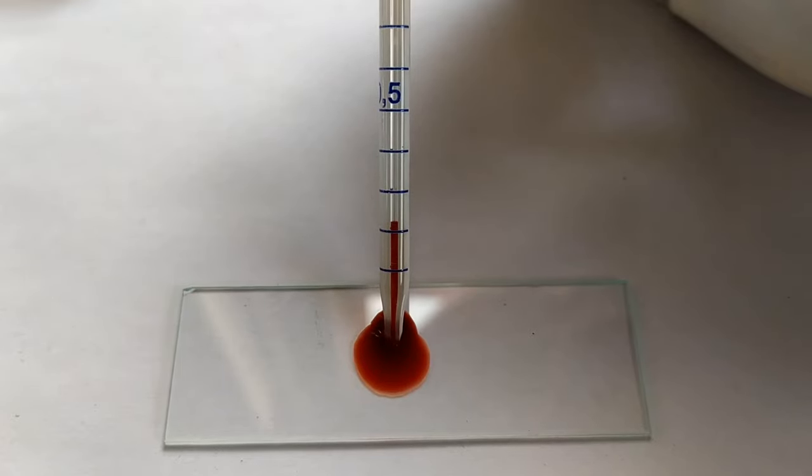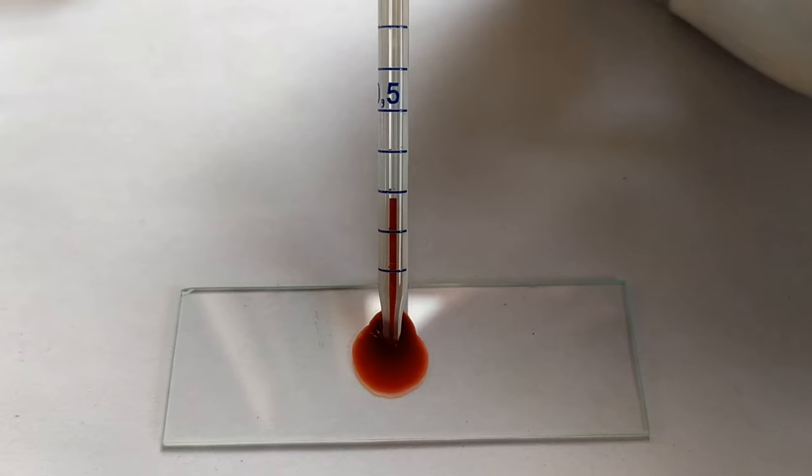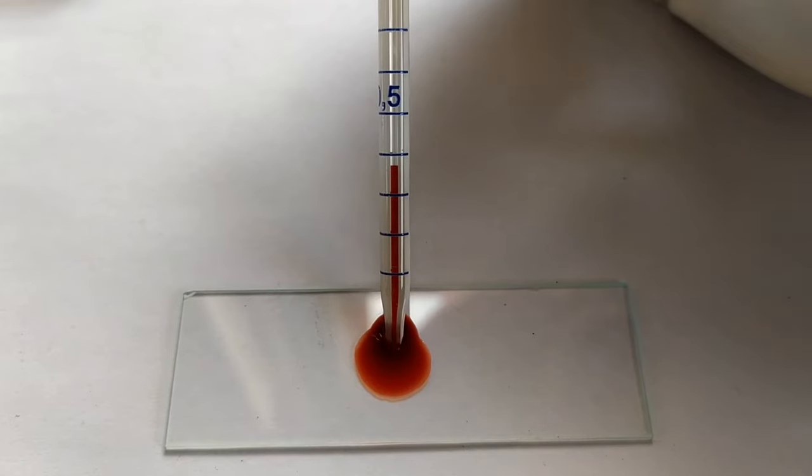If you happen to suck the blood beyond 0.5 mark you can either use a clean filter paper to carefully blot out excess blood from the pipette tip or carefully blow out excess blood using a syringe until it reaches down to the 0.5 mark.